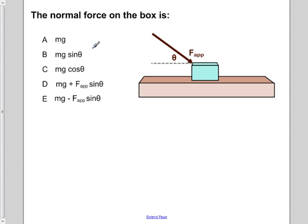The normal force on the box is... So the first thing we're going to do is label all the forces that are acting on this box. We know that the box's weight is going to pull down, which is given by mg, which is the mass times acceleration due to gravity.